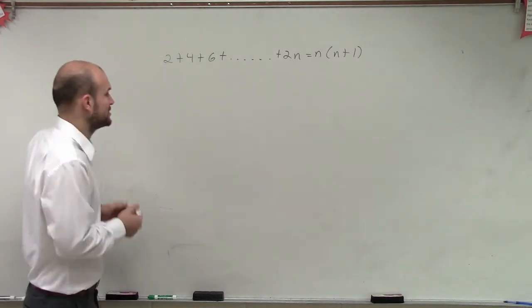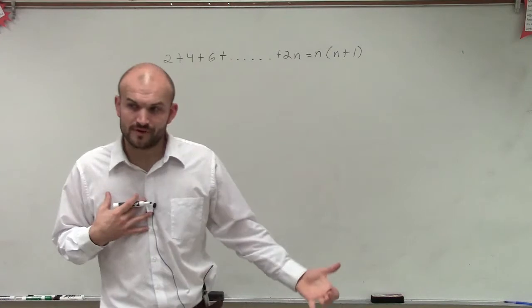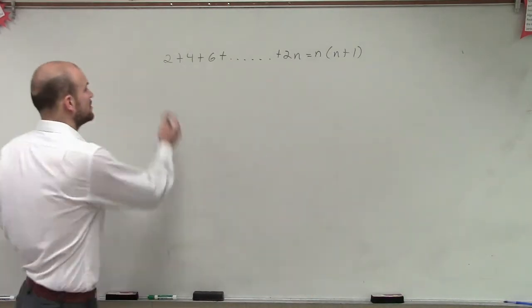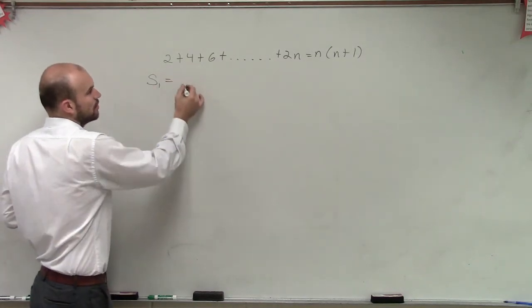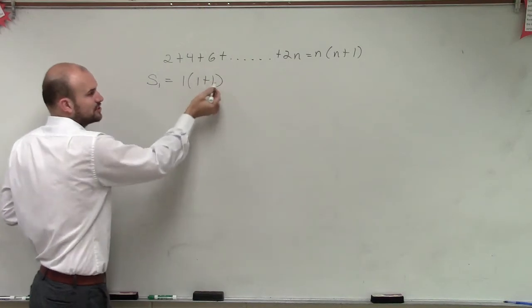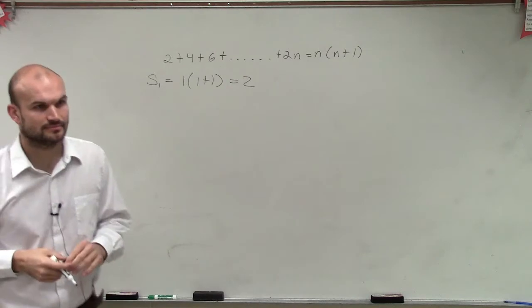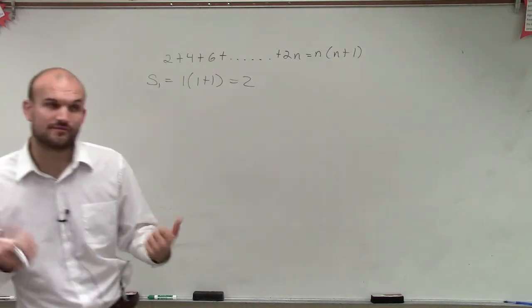So the first thing we do is prove, does this work for the first term? Because if it doesn't work for the first term, it's going to be difficult to prove that it works for every other term. So let's prove the first term. We say s of n equals 1 times 1 plus 1. Well, 1 plus 1 is 2, 2 times 1 equals 2. Is that a sum of our first term? Yeah. We're trying to find the sum, so that's the sum of our first term. So it works for the first term.